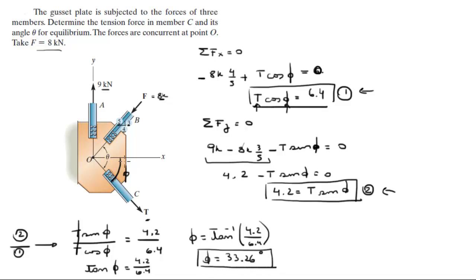Now we have this angle, we can use phi and plug it into here, into equation 2 or 1 if you want, to find the value of T. And when you plug in phi into this formula and you solve for T, you're going to get that T is equal to 7.65 kilonewtons.